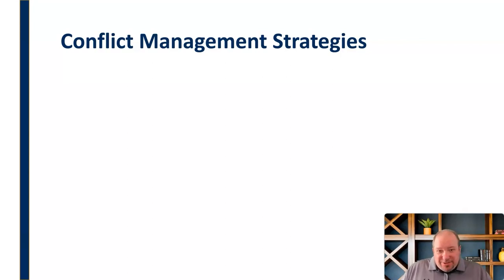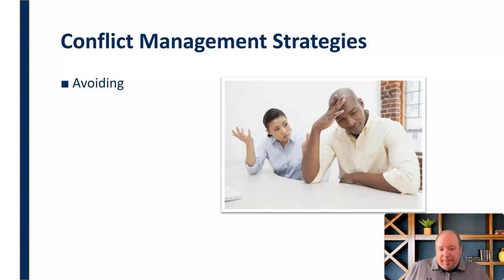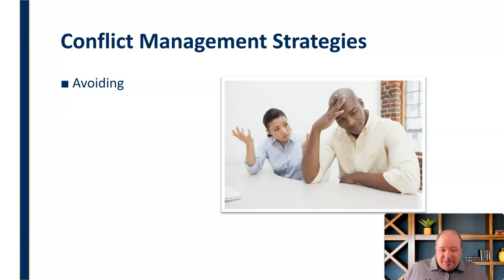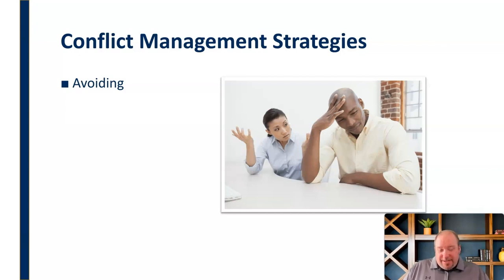Now let's jump into conflict management strategies. One strategy is avoiding — we can avoid a problem. It's not always the greatest idea. Avoiding is not going to make the conflict go away; it's just going to fester. Avoiding is what we call a lose-lose strategy. Both sides lose — you lose in the relationship, in the work relationship, in the social dimension, and in the task dimension. So avoiding is probably not the ideal strategy in most situations.